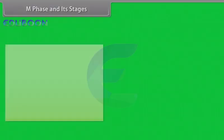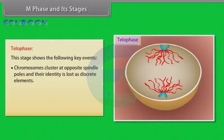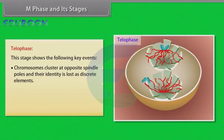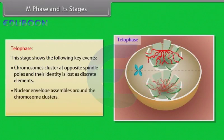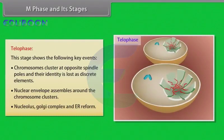Next stage is telophase. It shows the following key events: chromosomes cluster at opposite spindle poles and their identity is lost as discrete elements, nuclear envelope assembles around the chromosome clusters, nucleolus, Golgi complex, and ER reform.